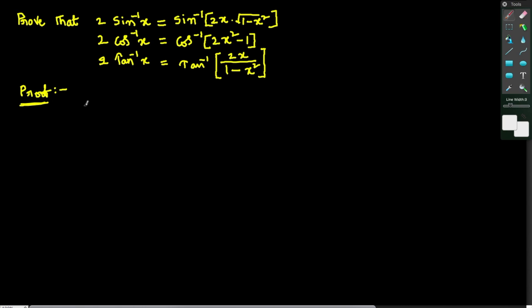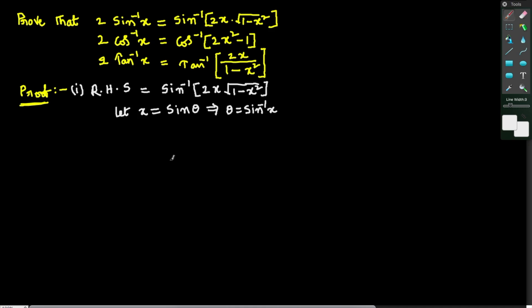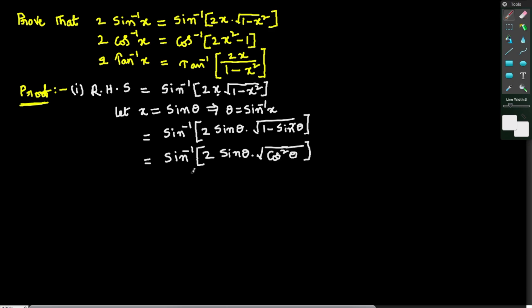To prove 2 sin⁻¹x = sin⁻¹(2x√(1−x²)), I prove this result by taking RHS. Take RHS: sin⁻¹(2x√(1−x²)). Now I take x = sin θ. If x = sin θ, then from the definition of the inverse sine function, θ = sin⁻¹x. Now substitute these things in RHS — in place of x, I write sin θ.